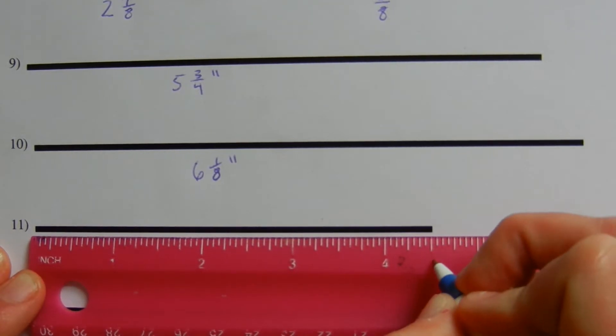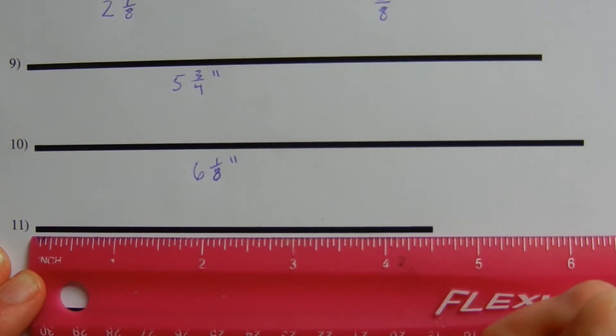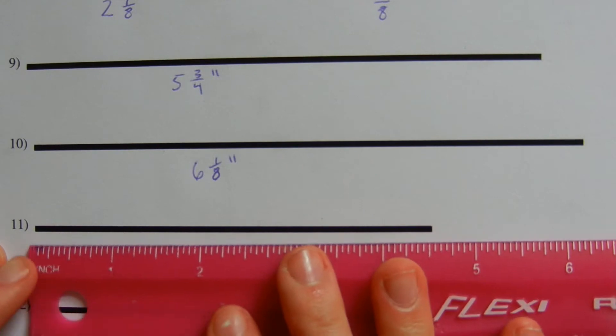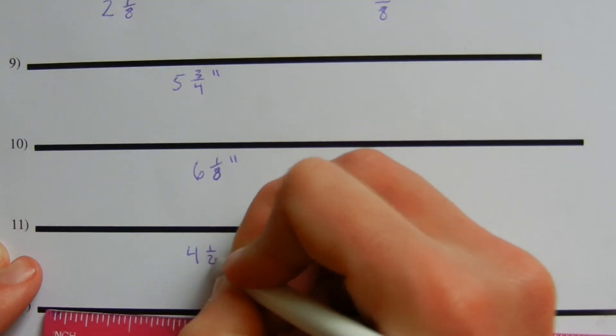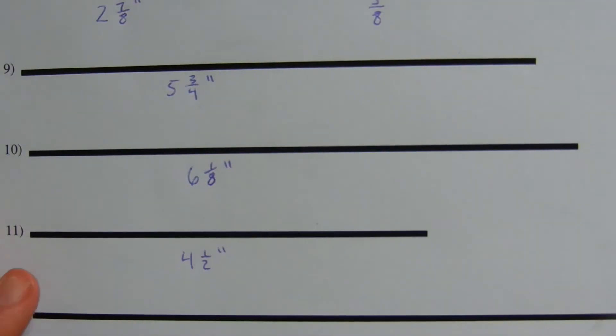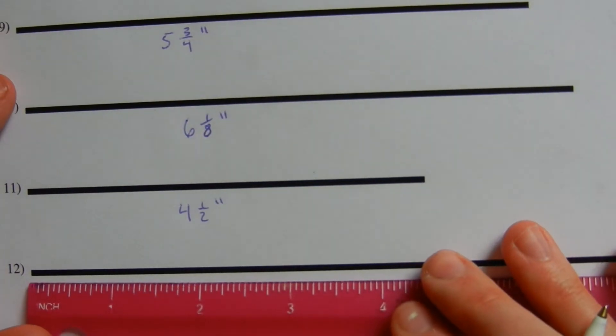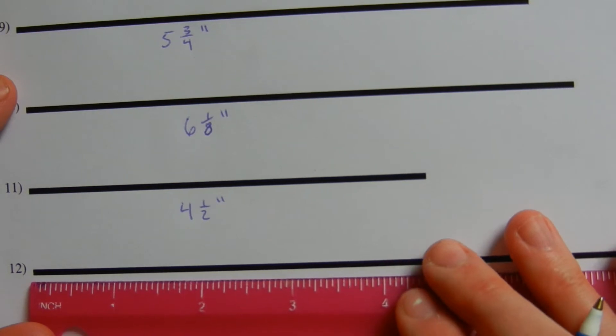Number eleven: lining our ruler up, you can see that it falls halfway between four and five, so this is four and a half inches.